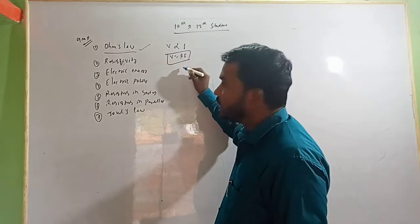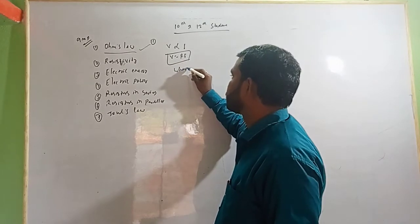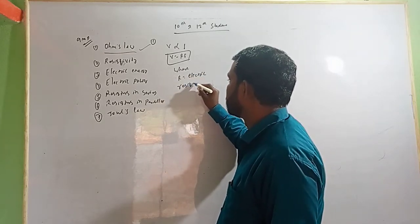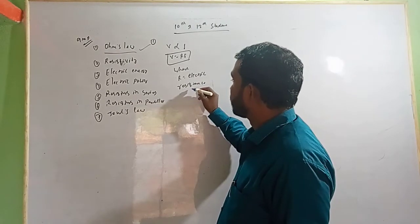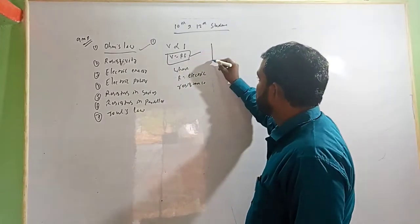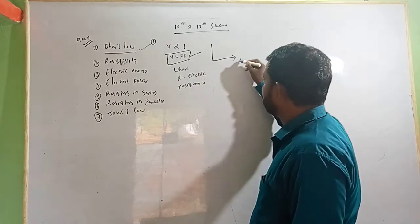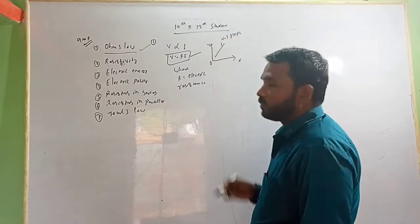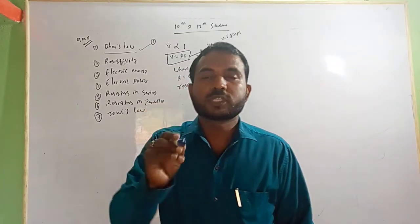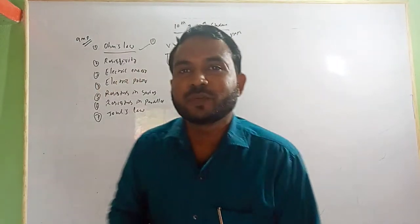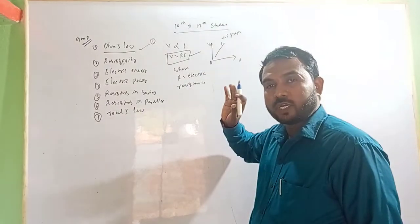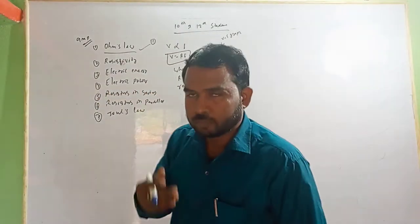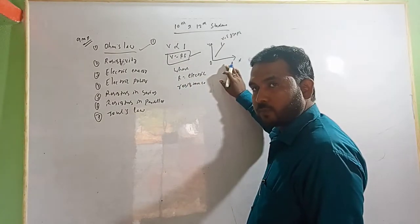If you remove the proportionality, you write V = RI, where R is the electrical resistance. So you get this formula. If you plot the V-I graph, here is the x-axis, y-axis, and origin. This V-I graph is valid at constant temperature and constant mechanical strain.